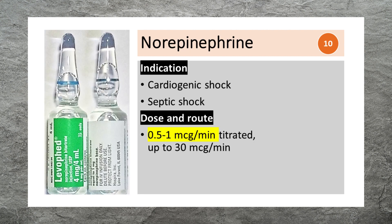Norepinephrine is used to treat cardiogenic or septic shock. It can be given as a continuous IV infusion, starting at 0.5-1 mcg per minute and titrated up to 30 mcg per minute.